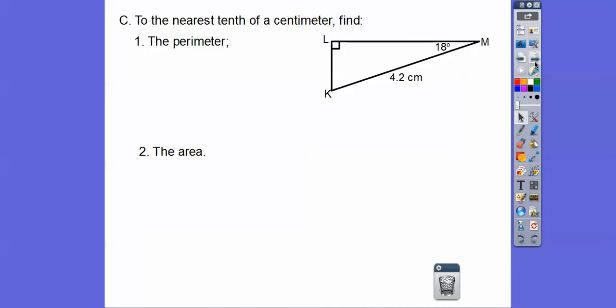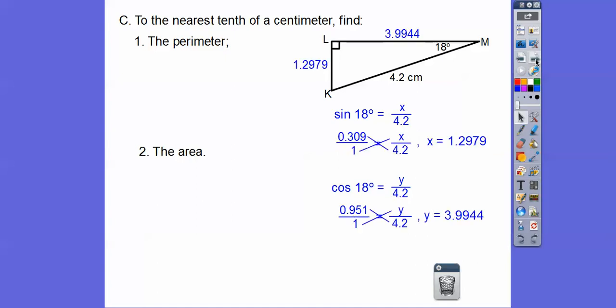Let's try one more application problem. To the nearest tenth of a centimeter, find the perimeter and area. This is the hypotenuse, so we're going to have to get this length and this length to get the perimeter and area. The sine of this angle is opposite over hypotenuse, so x over 4.2. The cosine of this angle is adjacent over hypotenuse, y over 4.2. We find the sine of 18, I get 0.309. The cosine of 18 is 0.951. Then we cross-multiply.